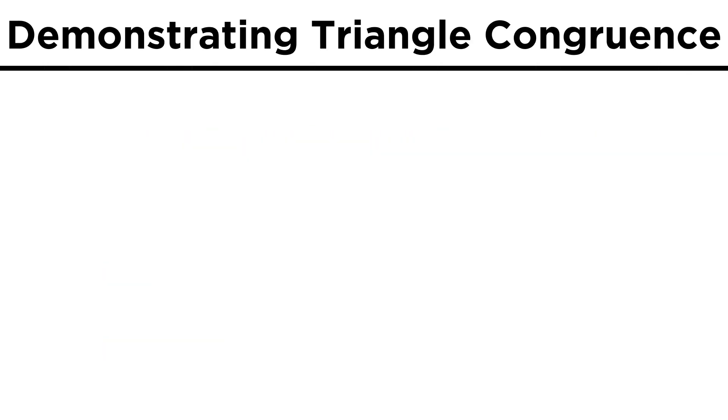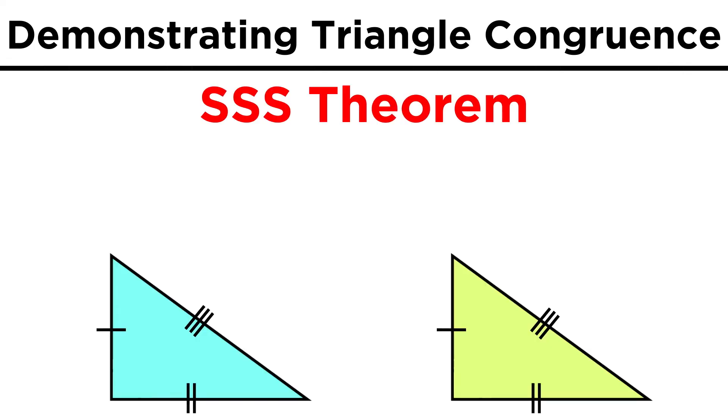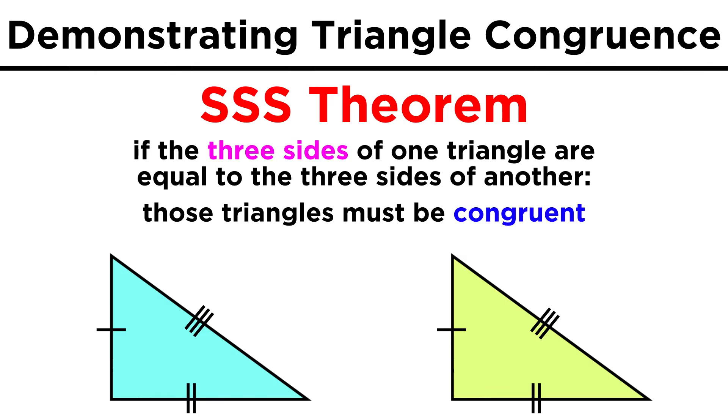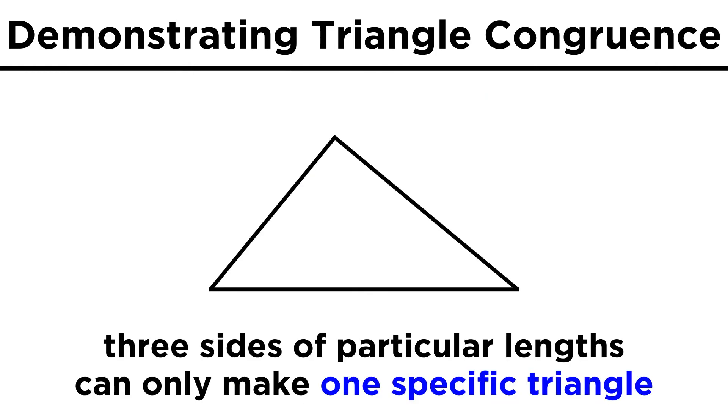We can also prove triangle congruence through different methods. First, there is the side-side-side theorem. This states that if the three sides of a triangle are identical to the three sides of the other triangle, they must be congruent, because there is only one way for three sides of particular lengths to come together. If any of the angles were any different, the side lengths would have to change accordingly to maintain a closed shape.